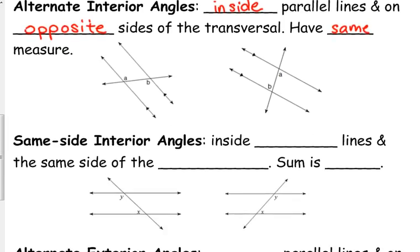Same side interior — they are also inside the parallel lines because they are interior, and they are on the same side of the transversal. I've kind of given it away by saying 'sum.' Let's figure out why they have a sum and what their sum is. Slide your wax paper down. Same side interior angles would be like 4 and A. What do 4 and A form when you overlap those two lines? A line — they form a linear pair. So their sum is 180 degrees.